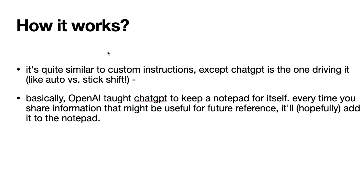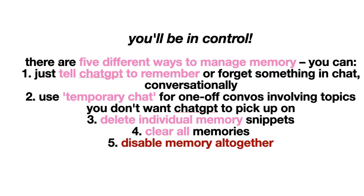You might ask: what does ChatGPT find useful, how do I make sure something goes into memory, or how do I remove something? Sometimes you don't want it — maybe you had an ex-girlfriend or boyfriend, you talked to ChatGPT about it, and six months later you broke up and you don't want ChatGPT to remember it. OpenAI is ensuring that you will be in control, and there are five different ways to manage memory.